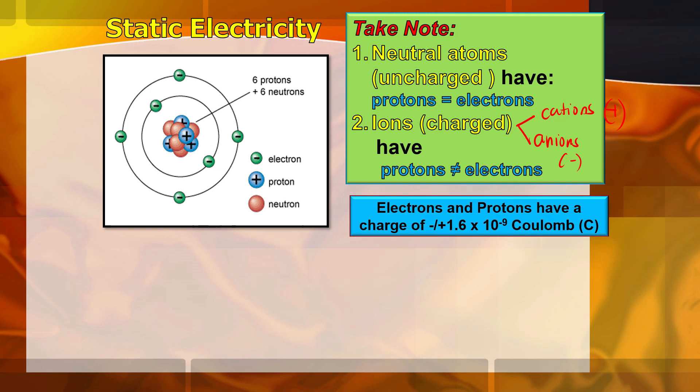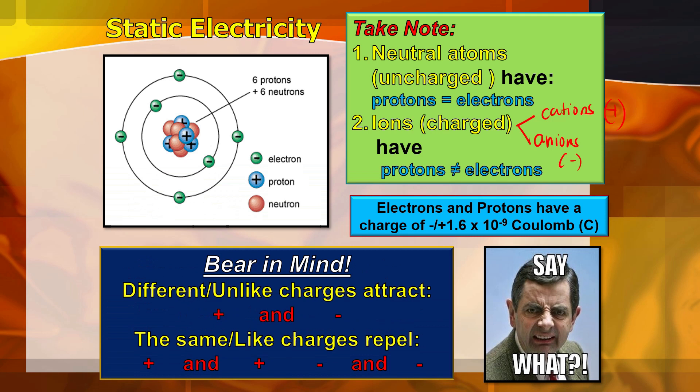In terms of the charge unit of measurement, electrons and protons have the same value but different signs. For electrons, we have negative 1.6 times 10 raised to negative 19 Coulombs, while for protons, we have positive 1.6 times 10 raised to negative 19 Coulombs. Bear in mind that different or unlike charges attract, and same or like charges repel.